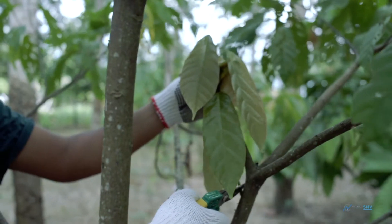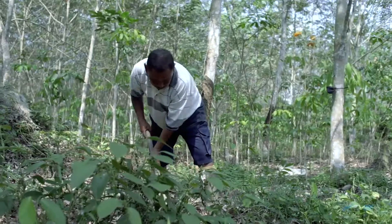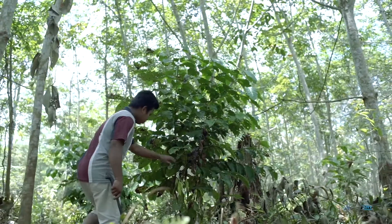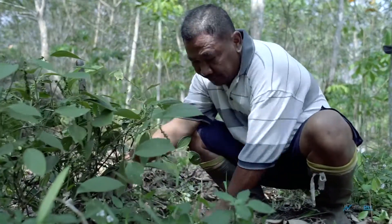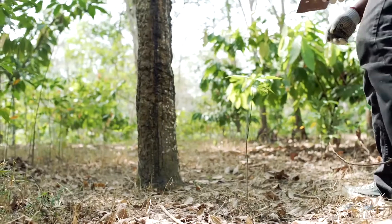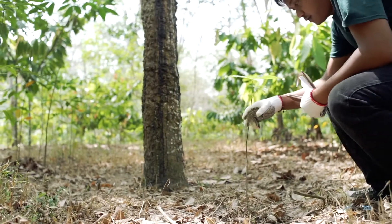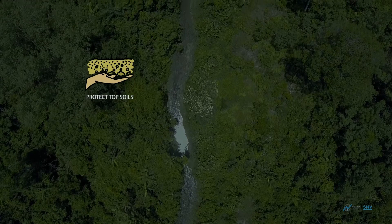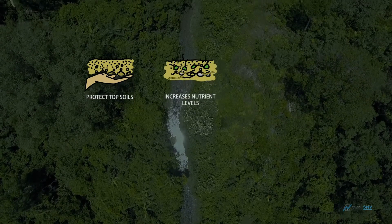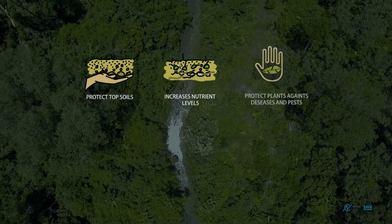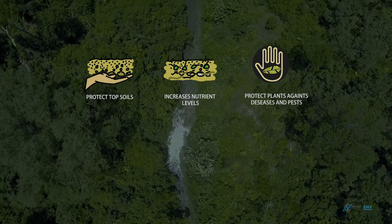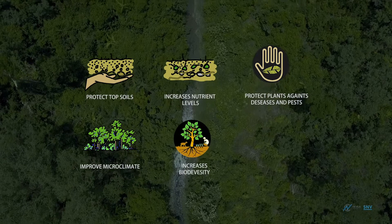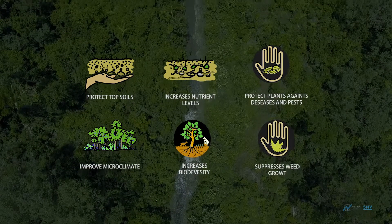Agroforestry supports good use of natural resources, increases land productivity, uses labour more efficiently, and reduces cost of weed control. Benefits for agricultural land: agroforestry protects topsoil, increases nutrient levels, protects plants against diseases and pests, improves microclimate, increases biodiversity, and suppresses weed growth.